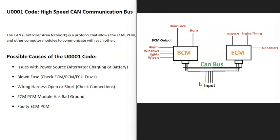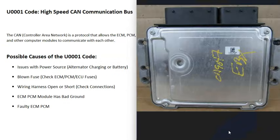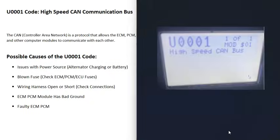There's some kind of issue going on and it's going to have to be troubleshot to find out why. One thing to note about this code is that it can be kind of difficult to troubleshoot sometimes, since you can be dealing with wiring and computer control modules. Sometimes it can be something simple, but just keep in mind that this code can be problematic and difficult to troubleshoot.